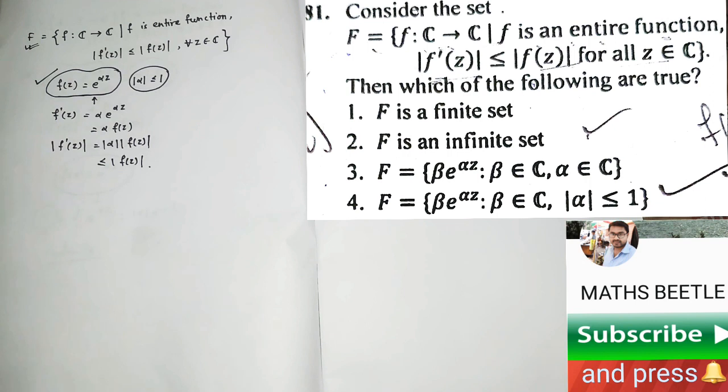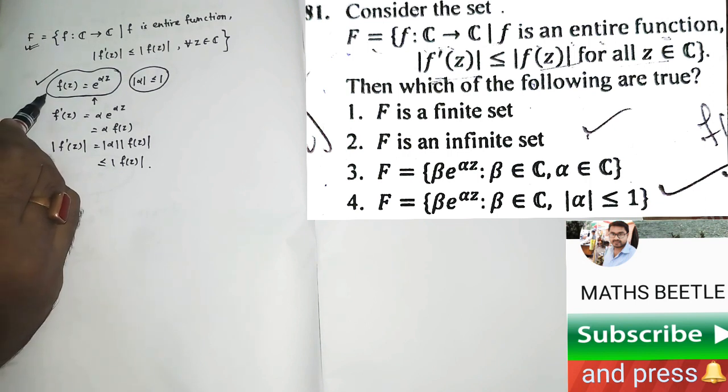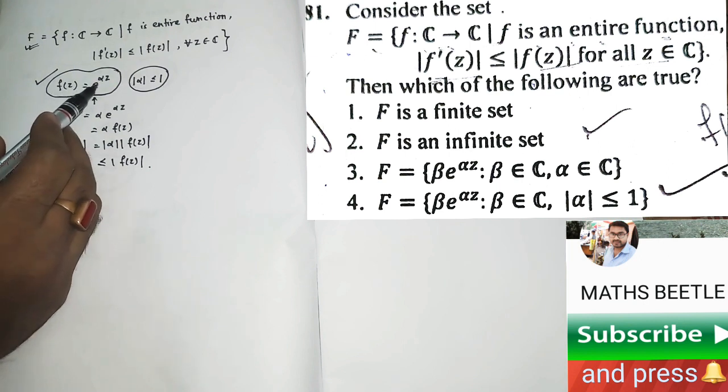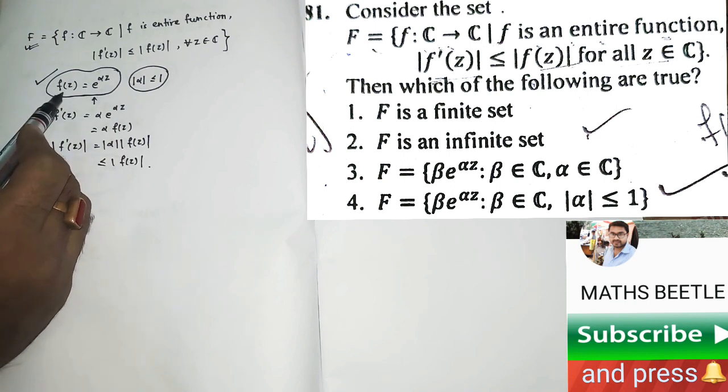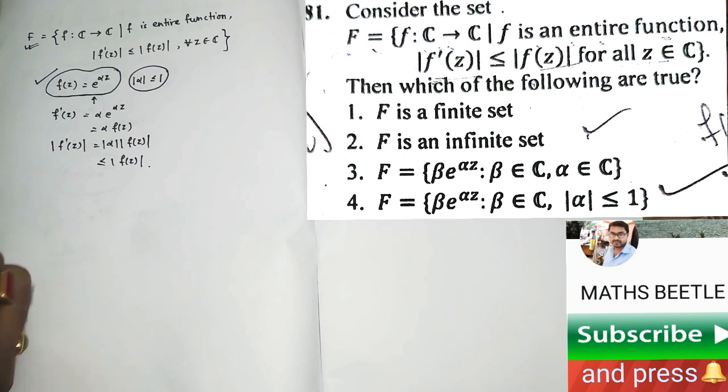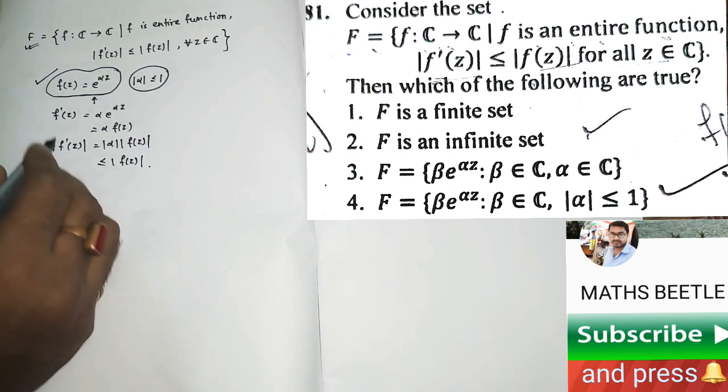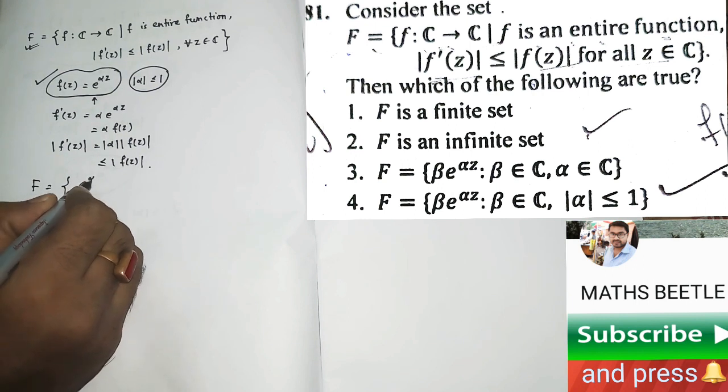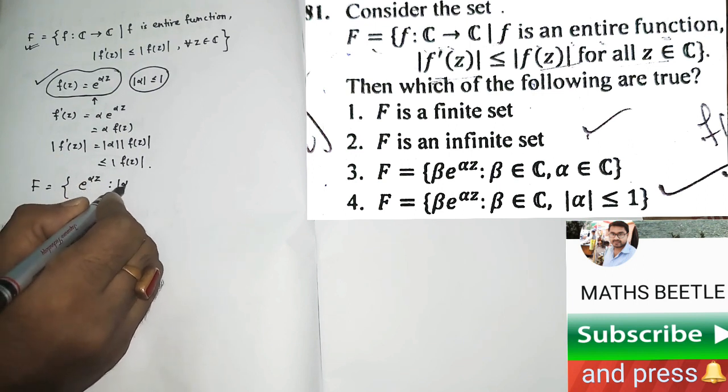So this was our F(z) and all the conditions are satisfied by this function. Immediately it is clear to us that this F(z) depends totally upon the values of alpha. Different values of alpha will give us different F(z). So your F in that case is going to be e to the power alpha z such that mod of alpha less or equal to 1.